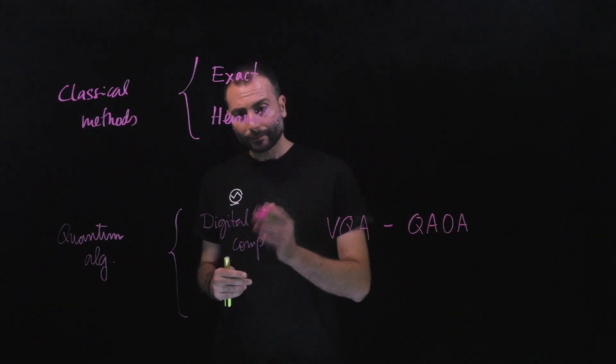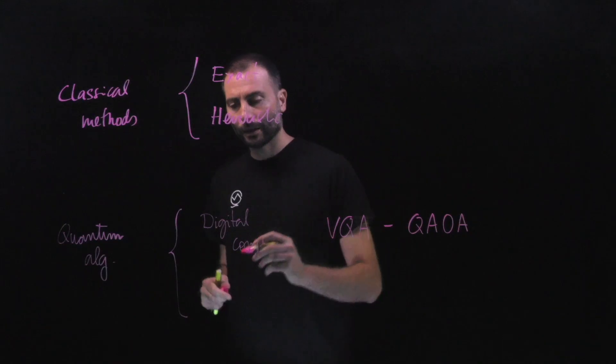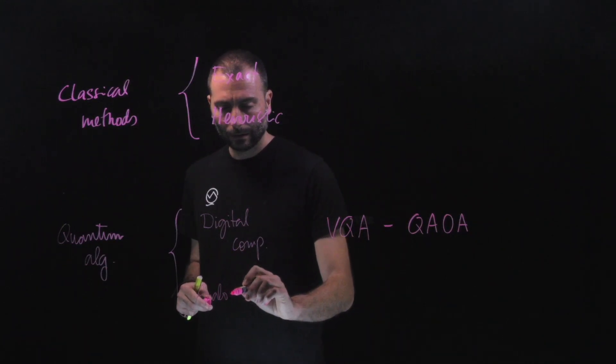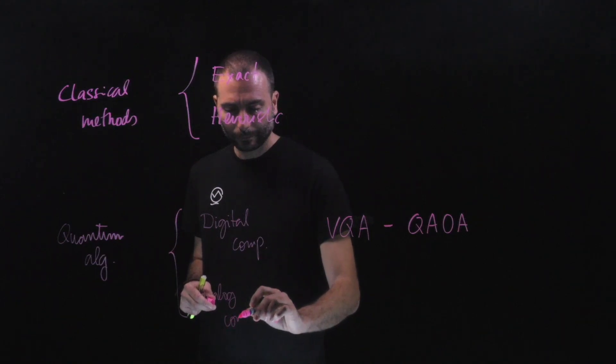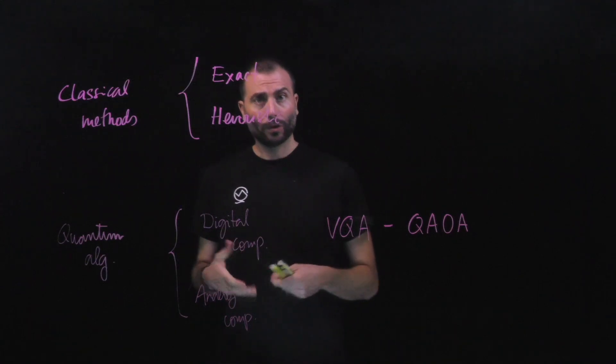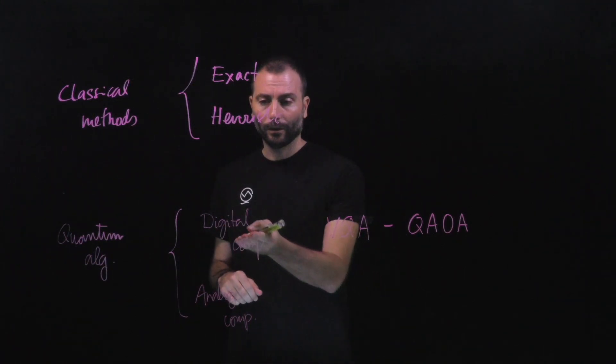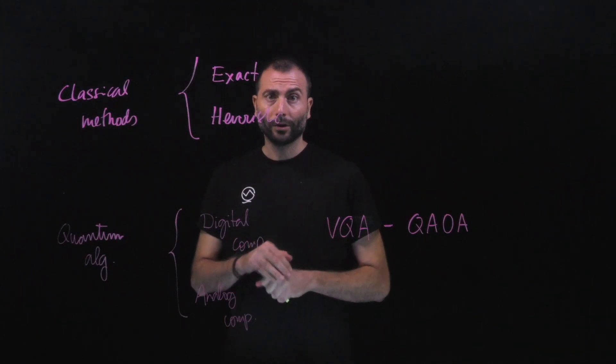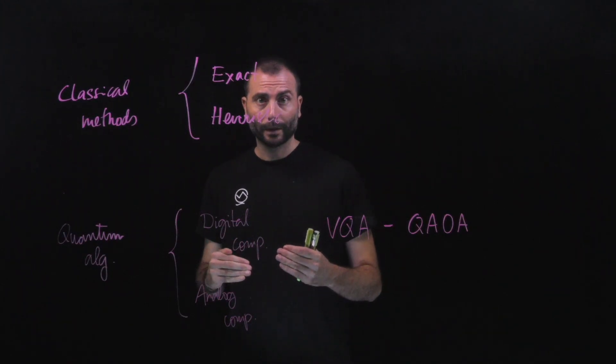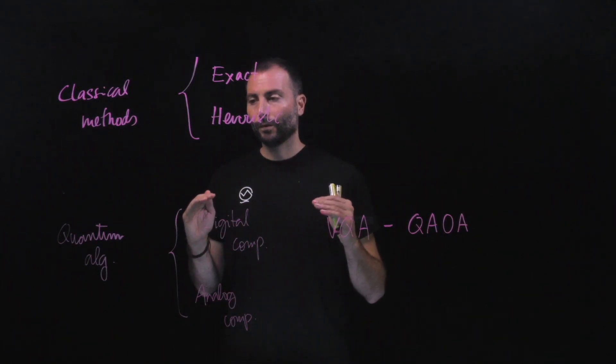There is another relevant paradigm of computation, which is the analog computer. An analog computer is a computer in which you also have qubits, but instead of performing gates like we know in the digital quantum computation, with analog computers what we do is that we transform the Hamiltonian of the system in time. It's a type of simulation, if you want, a type of quantum simulation of the problem.